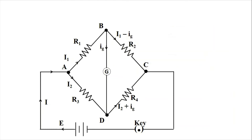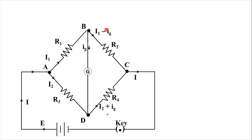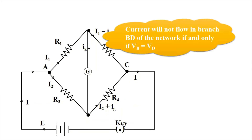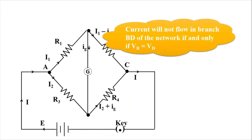Now, if the potential of terminals B and D are the same — that is, B and D are equipotential terminals — then no current flows between them, so Ig equals zero. If Ig is zero, then the same current I1 flows through resistance R2 and I2 flows through R4.